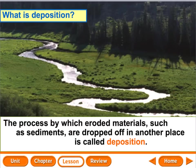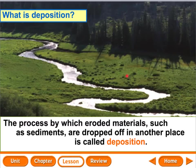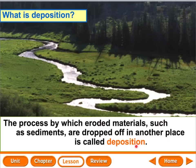We're going to talk about running water, waves, and wind, which also involve deposition. Deposition is the process by which eroded materials, such as sediment, are dropped off in another place. You break down the rocks, you move the rocks, and eventually the movement stops — the material has to go somewhere. The base word is deposit: when you go to the bank, you make a deposit, and that's where you put your money to stay. Same idea — that's where the rocks are going to stay.